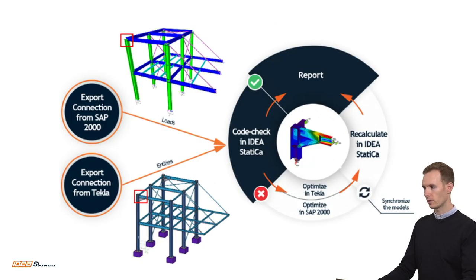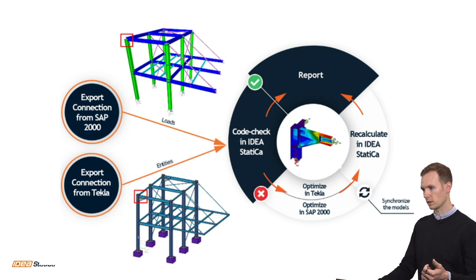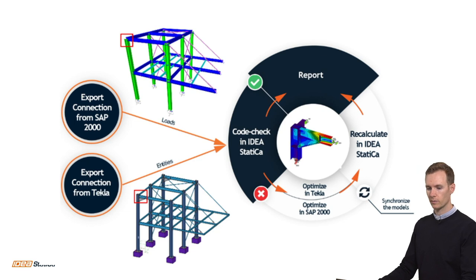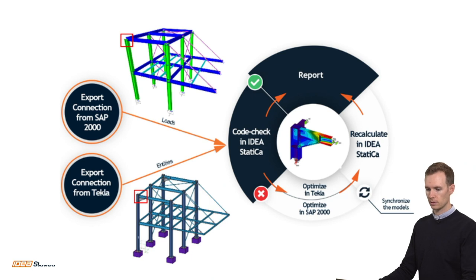Here is how the workflow actually works. You export the loads from your global model — in this example we use SAP2000, but you could also use FEMDESIGN, Robot and so on. Then you bring your loads into Ideastatica. From Tekla or Revit, you bring the connection itself — bolts, plates, cuts, welds, cross-sections and so on. All of this is exported into Ideastatica where you do the code check.